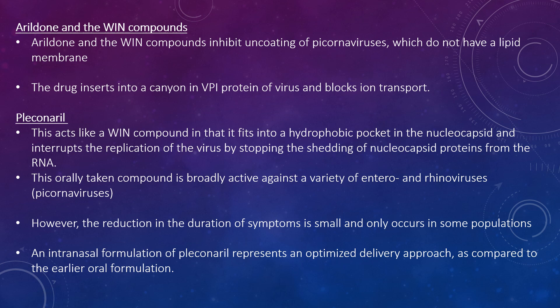Looking at amantadine and the WIN compounds: amantadine inhibits uncoating of picornaviruses, which do not have a lipid membrane. The drug inserts into a canyon in the VP1 protein and blocks ion transport. Another antiviral drug is pleconaril, which acts like a WIN compound in that it fits into a hydrophobic pocket in the nucleocapsid and interrupts replication of the virus by stopping the shedding of nucleocapsid proteins from the RNA. This orally-taken compound is broadly active against a variety of entero- and rhinoviruses. However, the reduction in the duration of symptoms is small and only occurs in small populations.